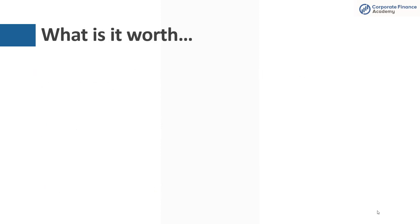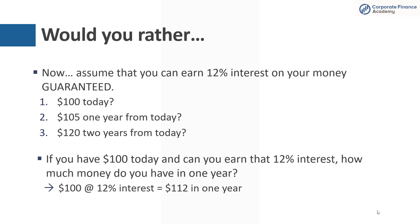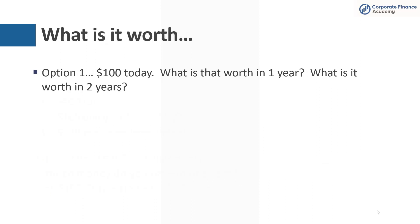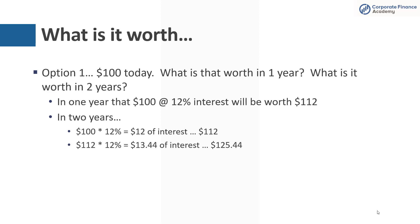So immediately, that says that option two — $105 in one year — is probably not for you. Let's keep going. Option one: what is it worth in year one, and what is it worth after two years? In one year, we just did the math — it would be worth $112. In two years, we walk it forward: $112 at the end of year one, with another year of 12% interest, and now you have $125.44.